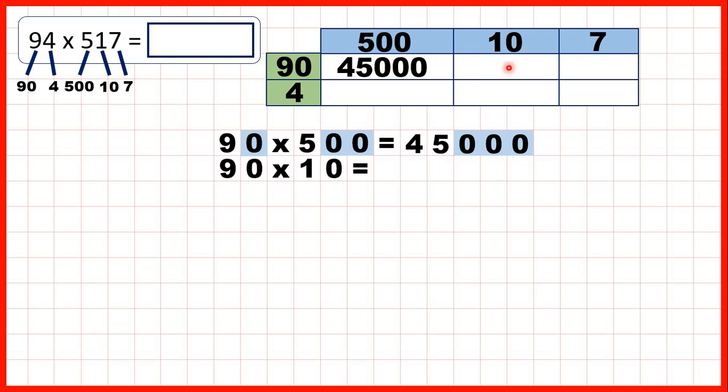For this box we need 90 times 10. That's 900. You could think of this as being 9 times 1 with two end zeros, or 90 times 10 is 90 with a zero on the end.